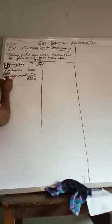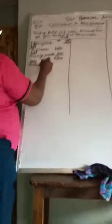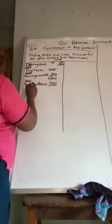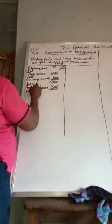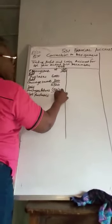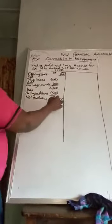Less purchases returns of 500 naira. This will give us net purchases of 5,820. This is what we will now add to the opening stock.